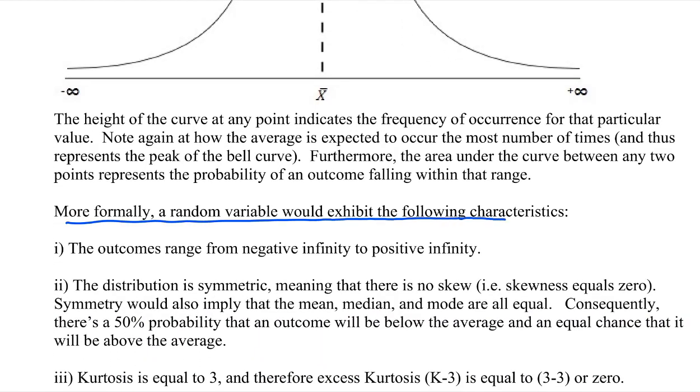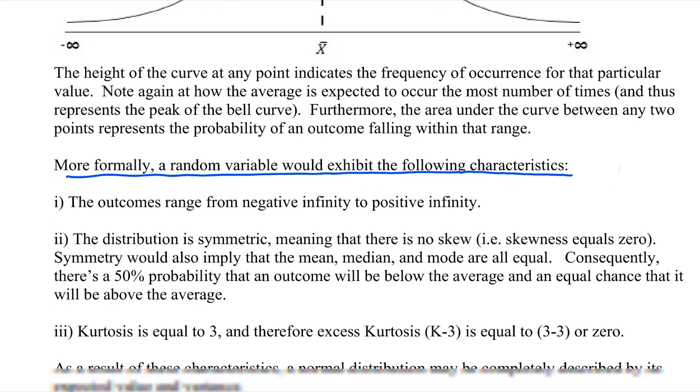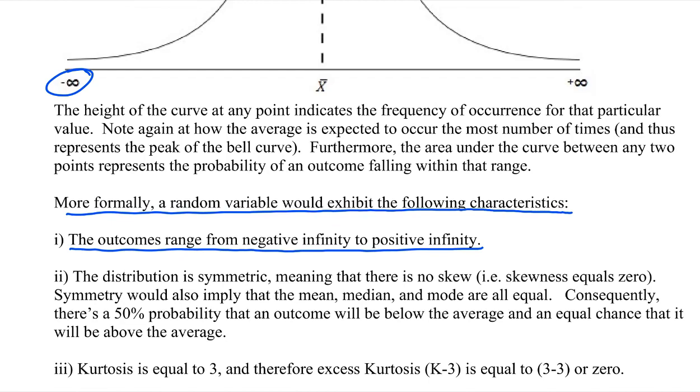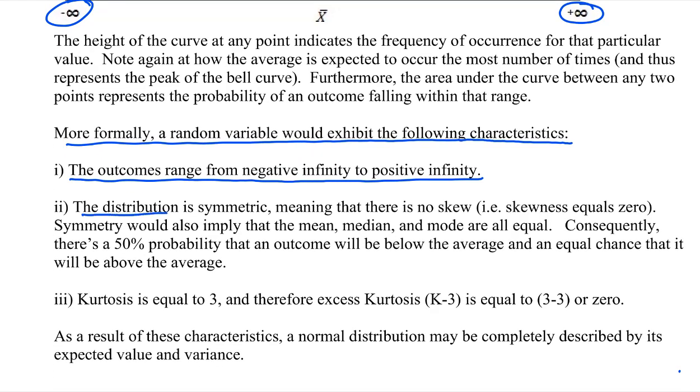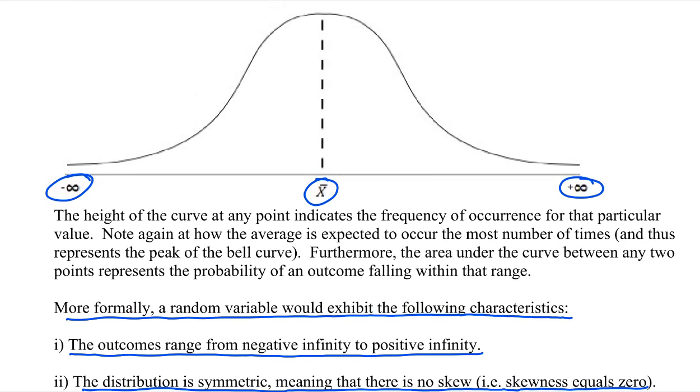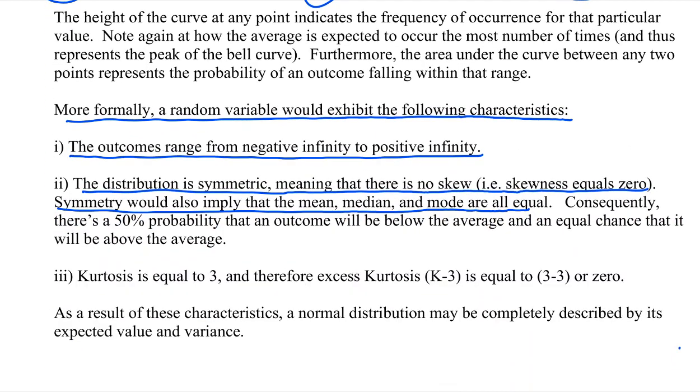So more formally, a random variable would exhibit the following characteristics in order to be considered normally distributed. So first of all, the outcomes range from negative infinity to positive infinity, as we've seen here, right? The distribution is symmetric, meaning that there is no skew. Or alternatively, the skewness metric would be equal to zero. Symmetry would also imply that the mean, median, and mode would all be equal. So this point here would represent the mean, the median, and the mode. And this is something we've covered in a previous module.